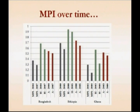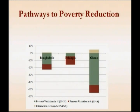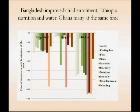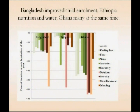Finally, looking across time, this is work that Gaston Yaleneski, Mauricio Apoblaza, and Juan Pablo Campo are doing for 10 countries. Looking at Bangladesh, Ethiopia, and Ghana — annualizing because the distance between their surveys was distinct — Ghana reduced its MPI the most and Ethiopia the least per year. Looking at changes in the 10 indicators, Ethiopia did not make much progress on many indicators, but it did reduce deprivations in water and nutrition. Bangladesh had more constant addressing of deprivations, particularly focused on child enrollment. Ghana, which reduced MPI the most, had progress on most indicators except for flooring. This raises questions about pathways and sequences of investments that drive changes.